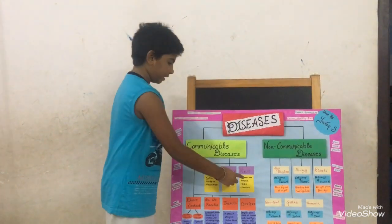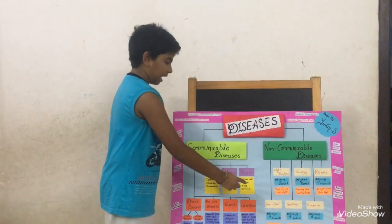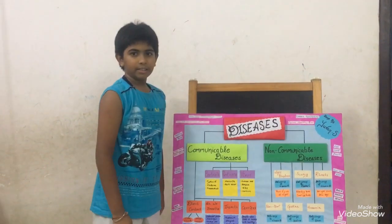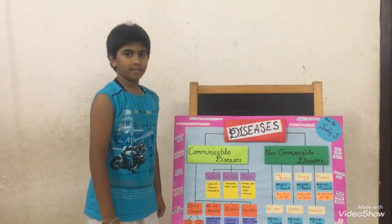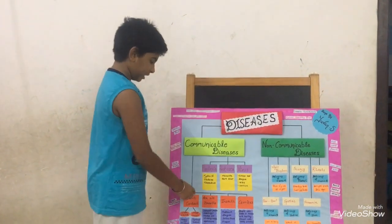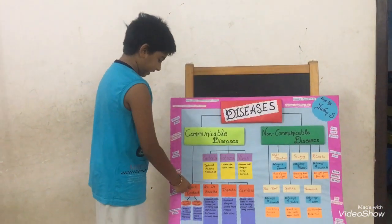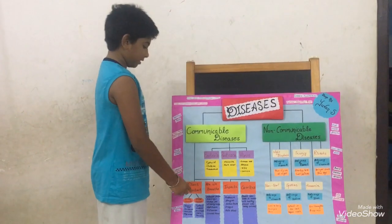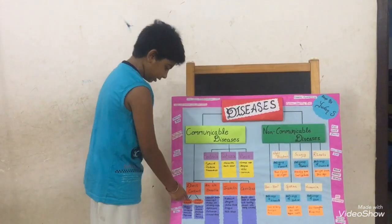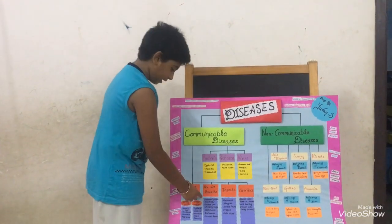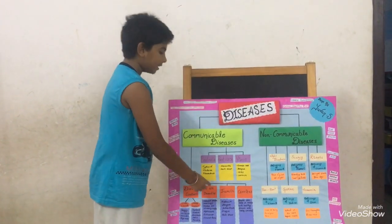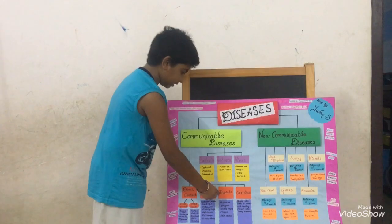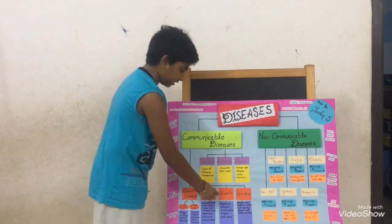The examples of virus are common cold, dengue, AIDS, and the ruling word COVID-19. These spread through direct contact, blood touch, food and water, airborne, and insects.